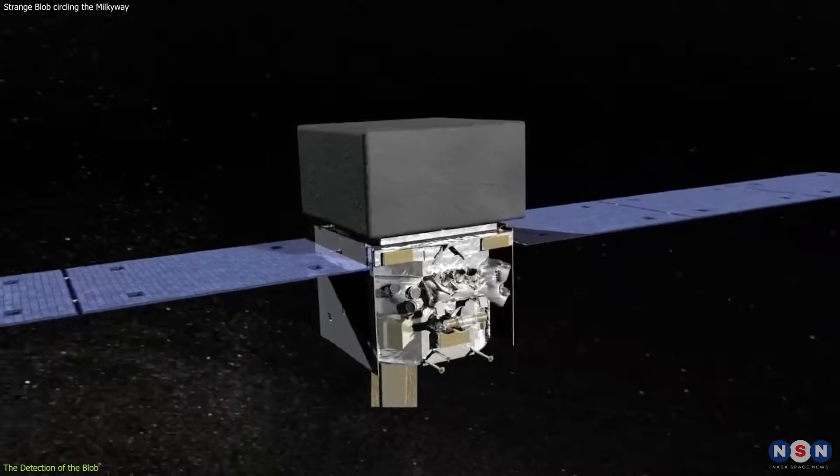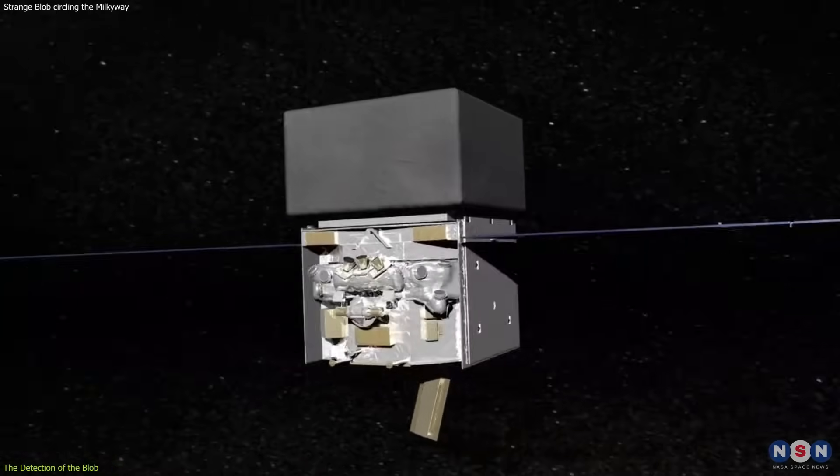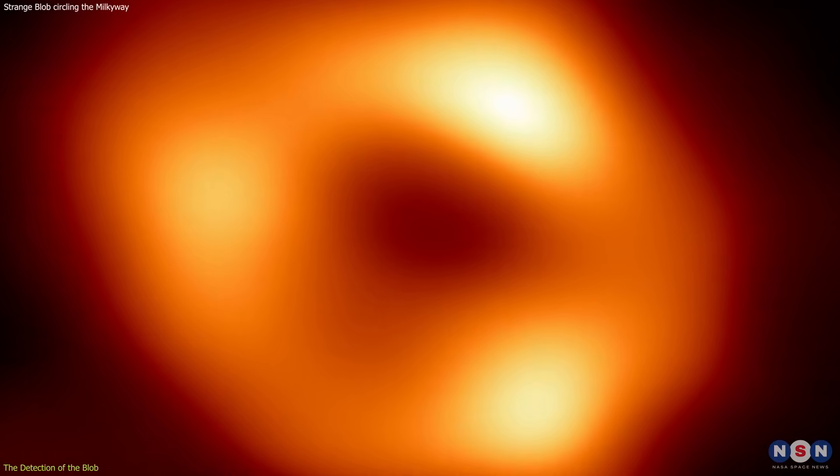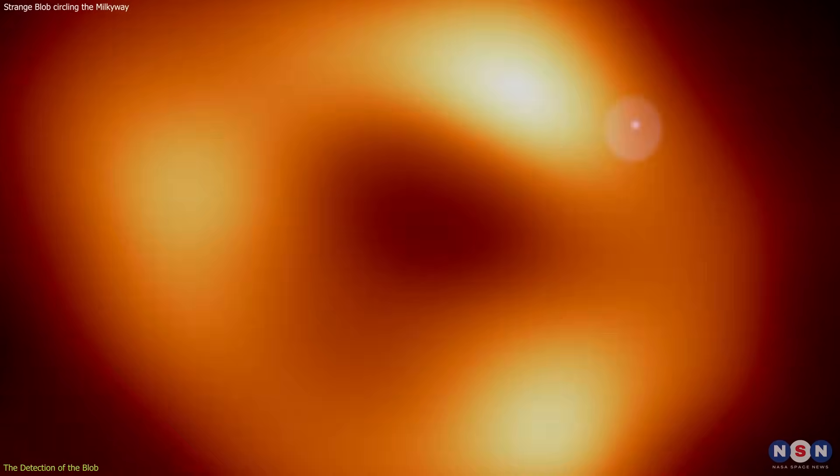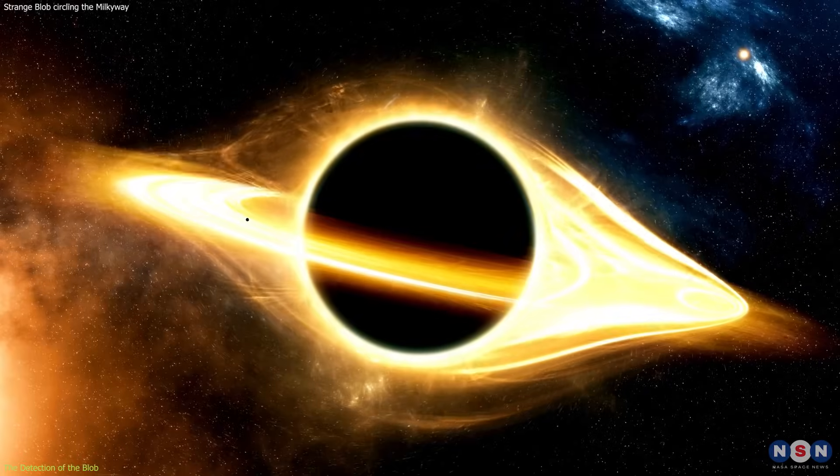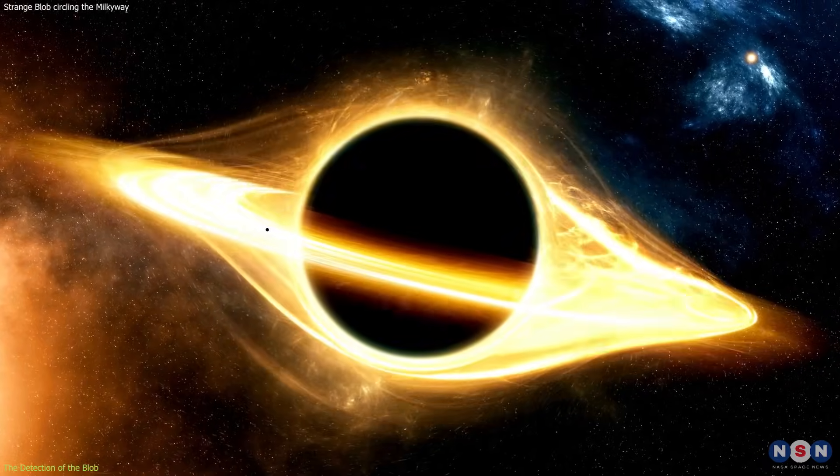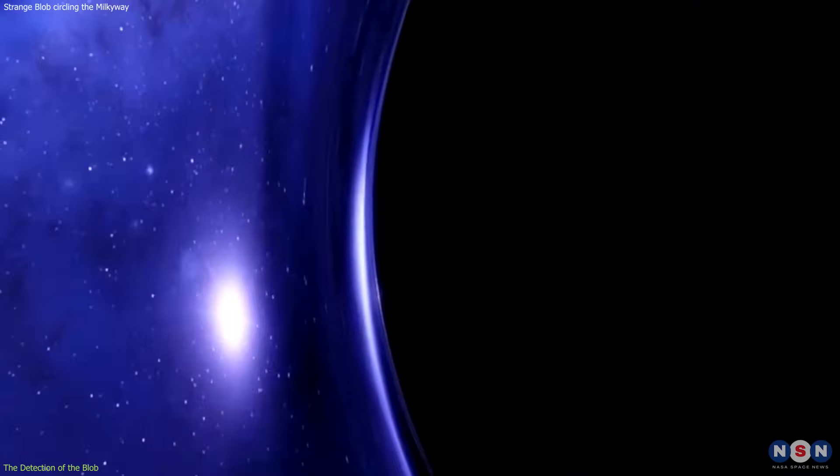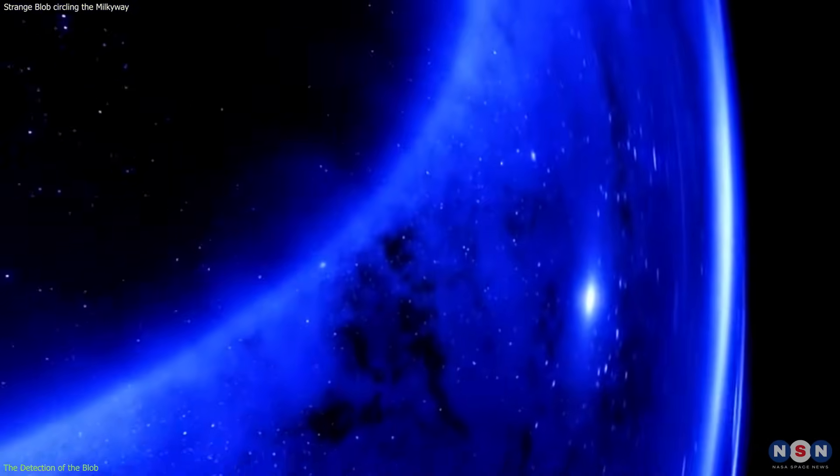It is like a sleeping giant that occasionally wakes up and shows some signs of activity. One of these signs of activity was detected by the Fermi Telescope when it observed a regular pulse of gamma ray radiation coming from near Sagittarius A-star every 76 minutes. This was a very surprising and intriguing discovery, because the black hole itself cannot emit radiation, since nothing can escape from its event horizon, which is the point of no return for anything that falls into it.